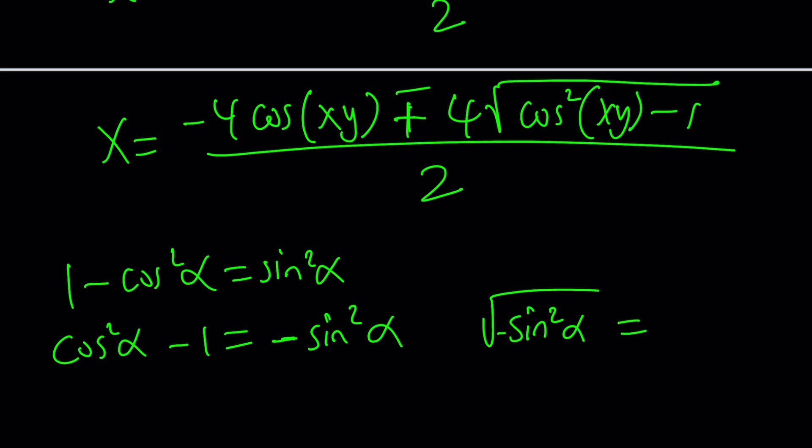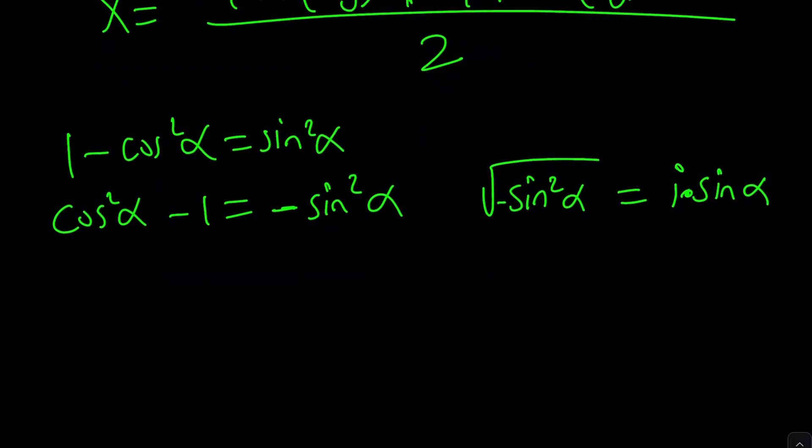When you have that, it is plus minus i sine alpha. Of course, I'm not putting the plus minus there because plus minus is already there, so it should be taken care of. In other words, this turns into i times sine alpha.